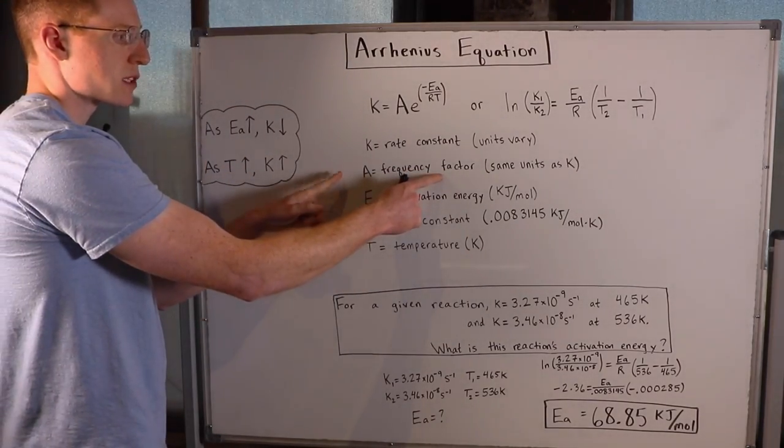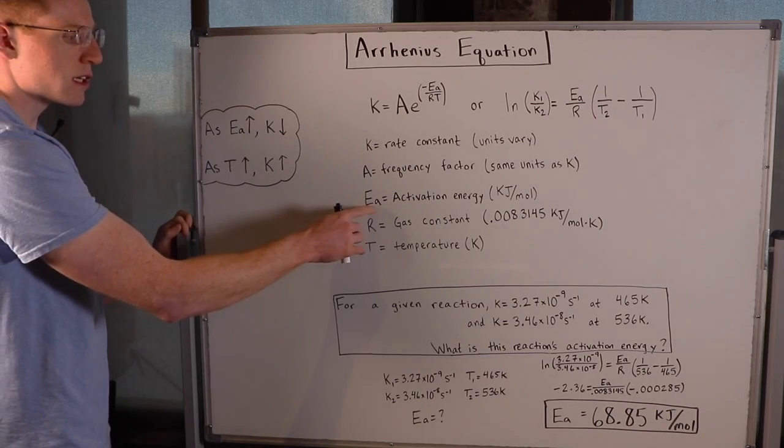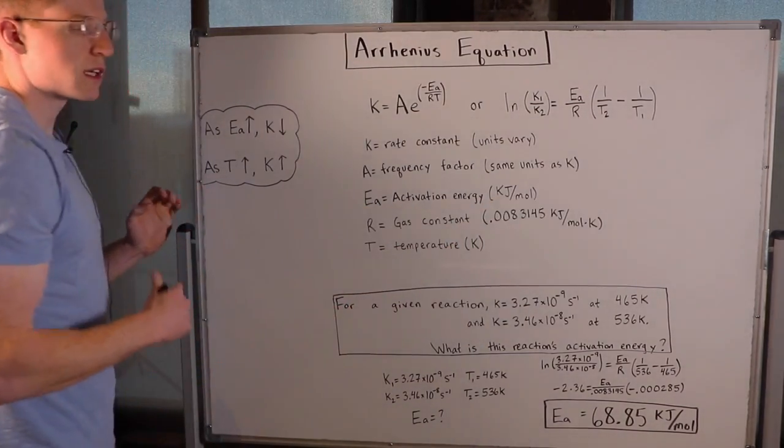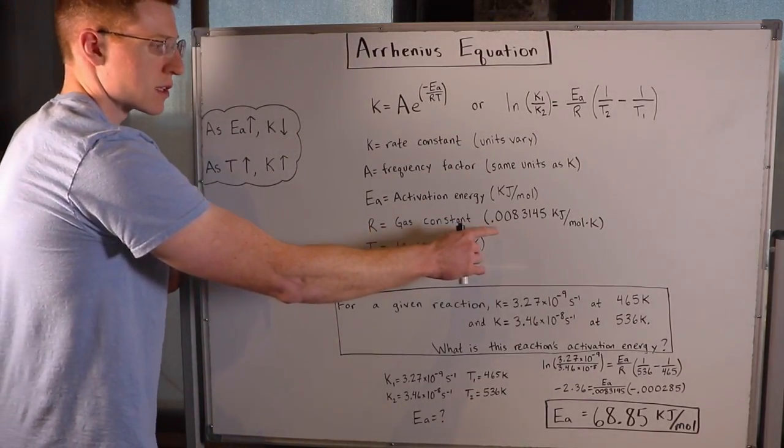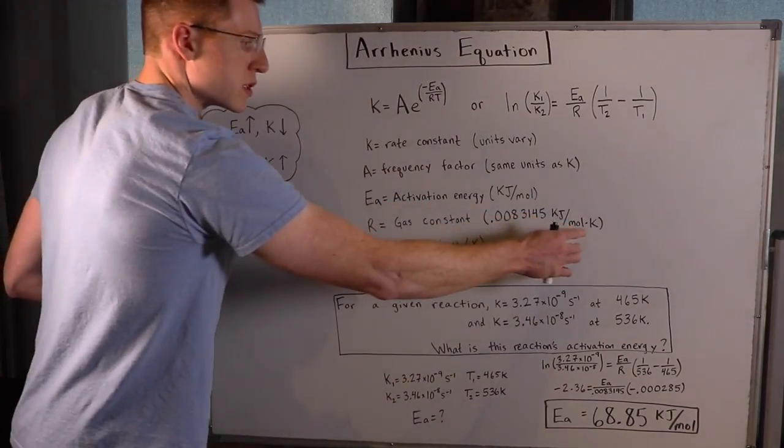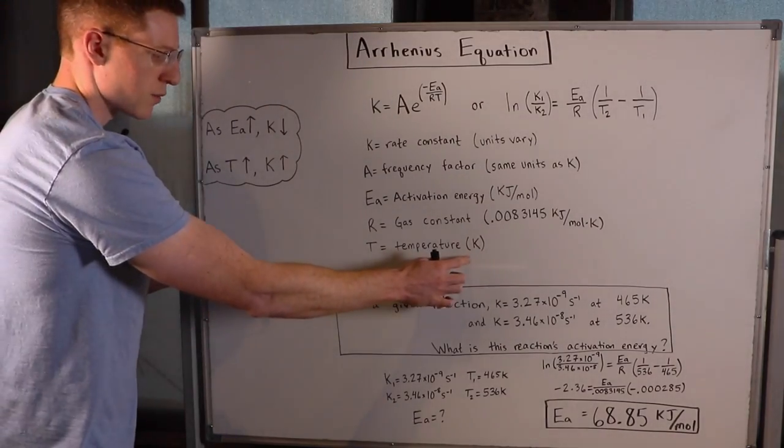A is the frequency factor and has the same units as k. Ea is the activation energy, usually in kilojoules per mole. R is the gas constant, 0.0083145 kilojoules per mole times kelvin. Finally, T is the temperature in kelvin.